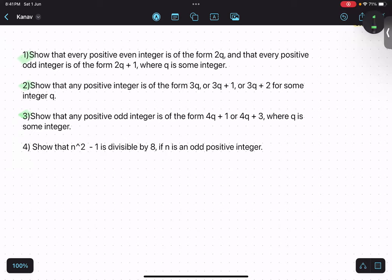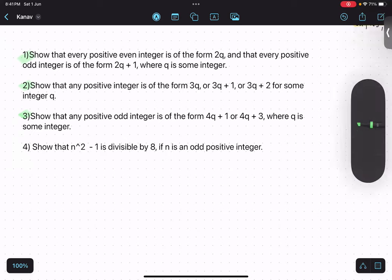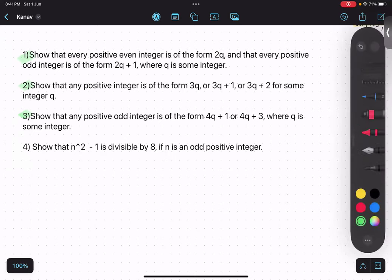As and when I will do it, I will show it to you. Now let us read the first question: Show that every positive even integer is of the form 2q, and that every positive odd integer is of the form 2q plus 1, where q is some integer.